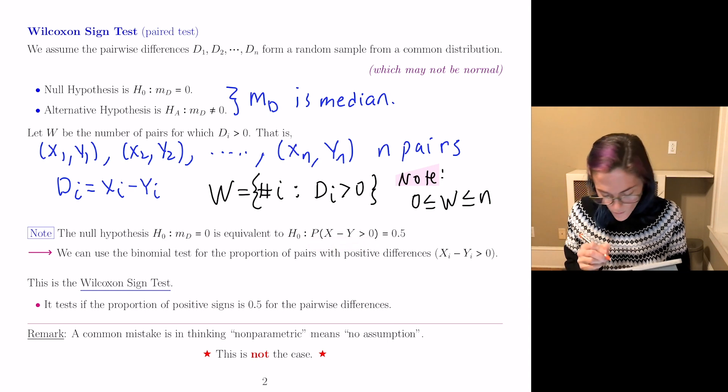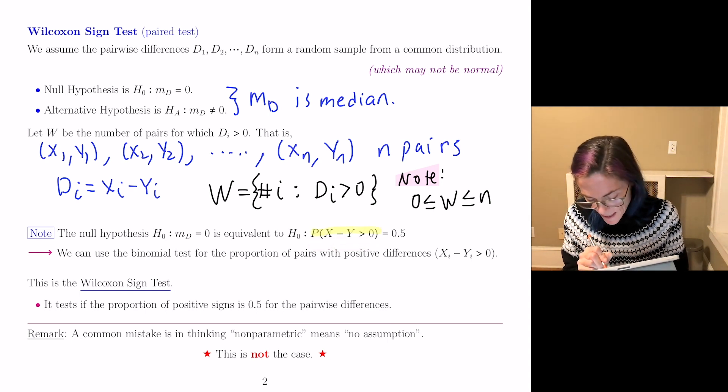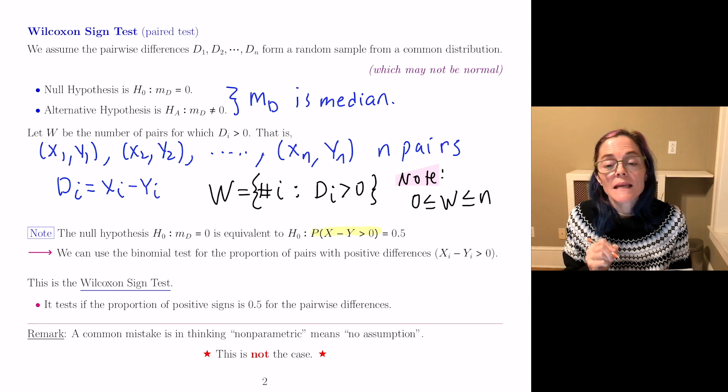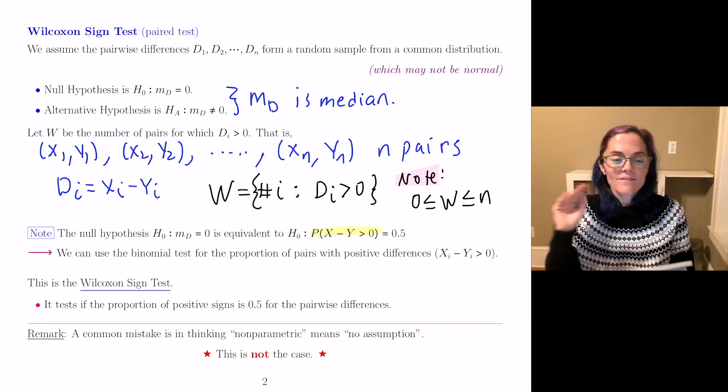the probability, I will highlight this, that X minus Y is positive equals 0.5.